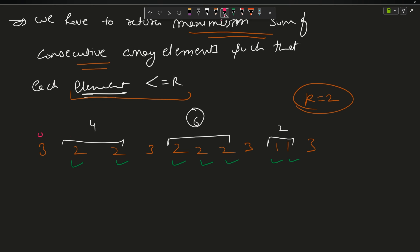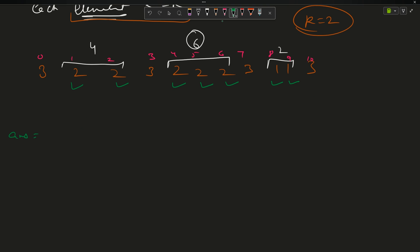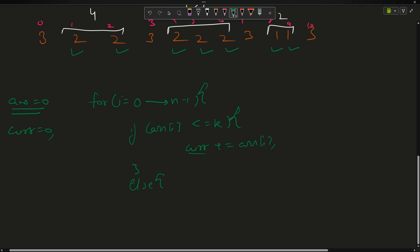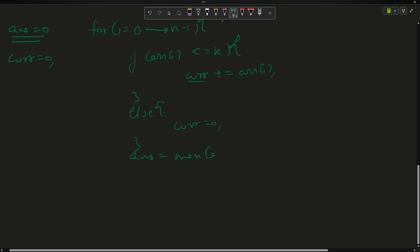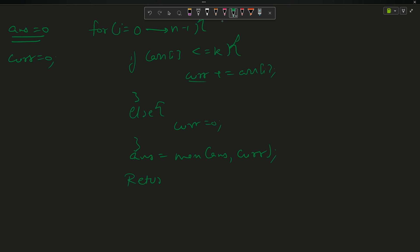The approach: keep answer = 0 and current = 0. Traverse from i = 0 to n-1. If arr[i] <= k, it is valid so do current += arr[i]. Otherwise, set current = 0. After each step, update answer = max(answer, current). Finally return answer.